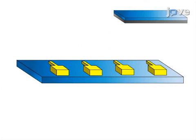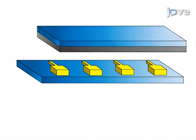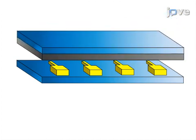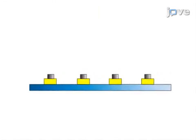Next, the donor and receiver are put in contact and a laser pulse is focused at the carrier-donor interface. The pulse forward transfers the donor micro bumps from the irradiated zone onto the receiver contact pads.